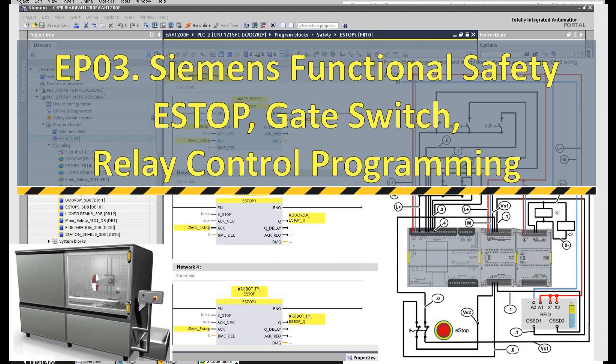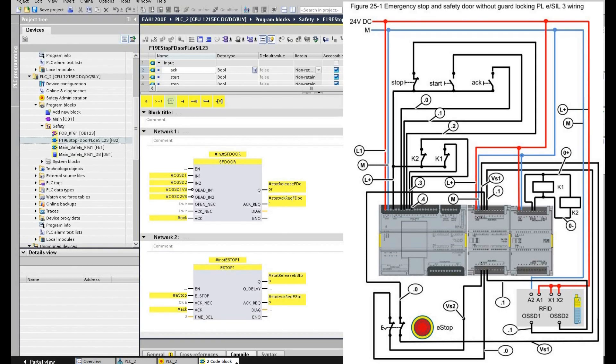Hello everyone, welcome to this Siemens i7-1200 safety controller series video. In this video, I will mainly introduce the safety program for the safety e-stop and the gate switch. In the previous video, we introduced the hardware diagram and the hardware configuration for the Siemens i7-1200 safety input and output module, and we used the scenario 19 example library as a base.